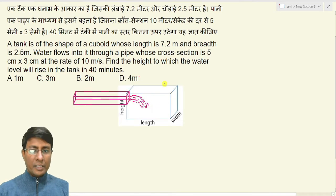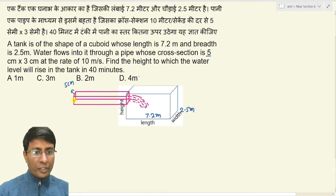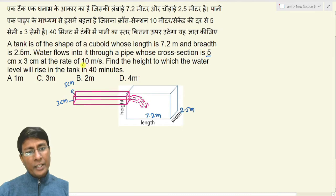This is a tank whose length is given as 7.2 meters and width is given as 2.5 meters. Now this means that water is filled through a cross-section which is 5 centimeters into 3 centimeters. So this value is 5 and this value is 3 centimeters. Here the speed of water is given as 10 meters per second. It means water flows at 10 meters per second rate through the cross-section.